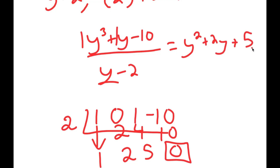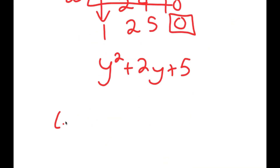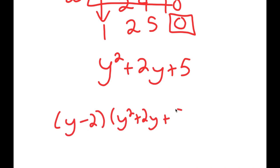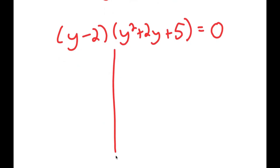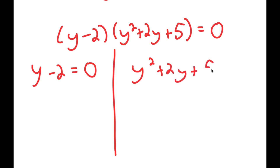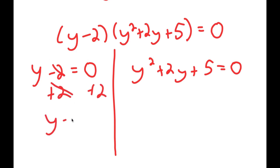So y cubed plus y minus 10 factors as y minus 2 times y squared plus 2y plus 5 equals 0. This gives two equations: y minus 2 equals 0, which gives y equals 2 — a solution we already found — and y squared plus 2y plus 5 equals 0.